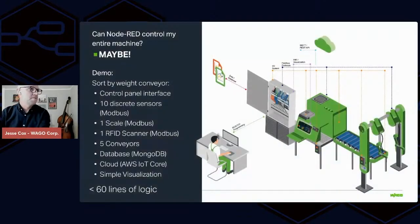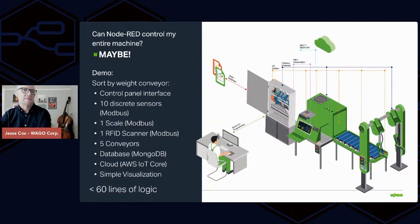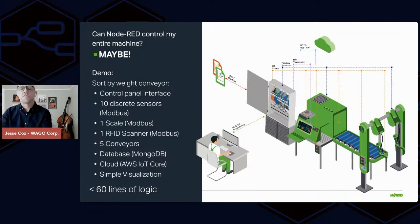I'm going to fly through this last bit because I want to show a quick demo. The question is: can Node-RED control my entire machine? The answer is — maybe. I have a quick demo showing a sort-by-weight conveyor with a control panel interface. It's all virtualized — it's got discrete sensors, Modbus data coming from a scale, RFID controlling a bunch of conveyors, database hooks, AWS hooks, and very simple visualization. What it comes down to is working through the project and looking at which components you can leverage Node-RED for.